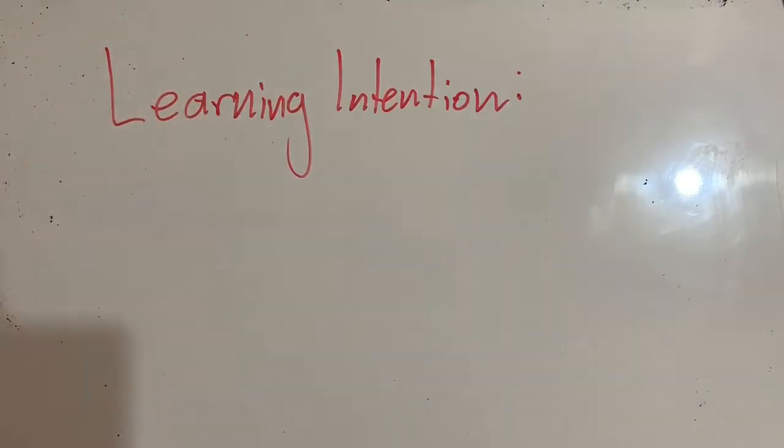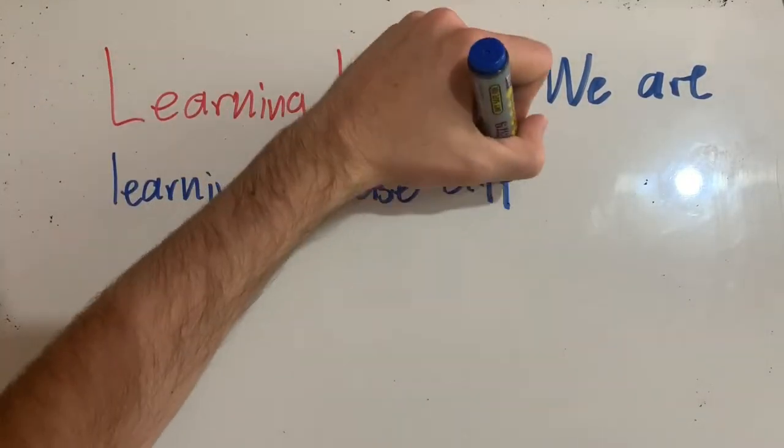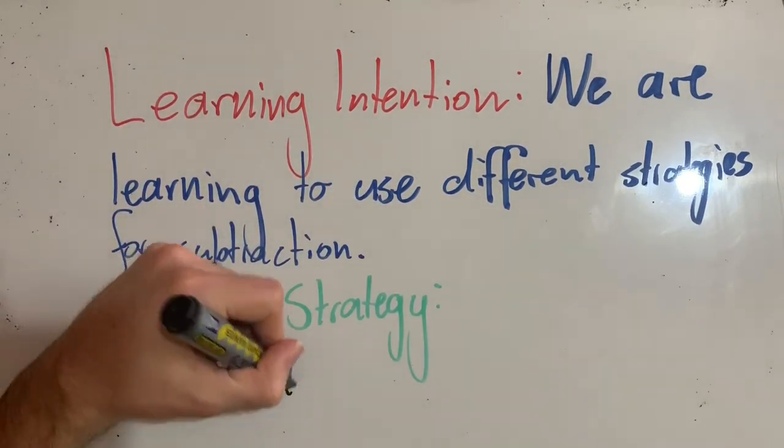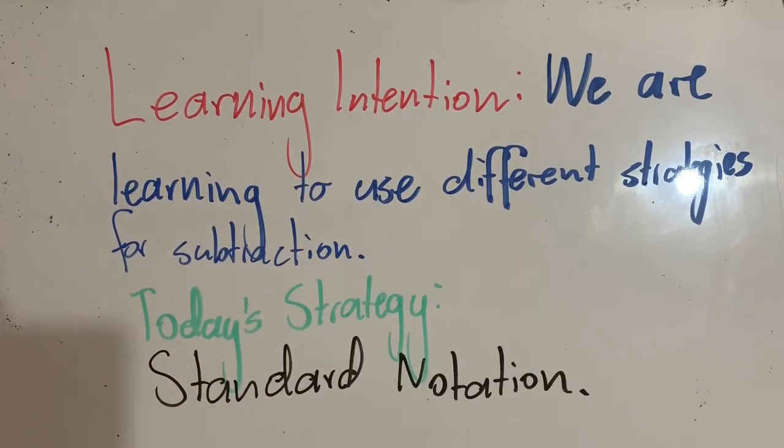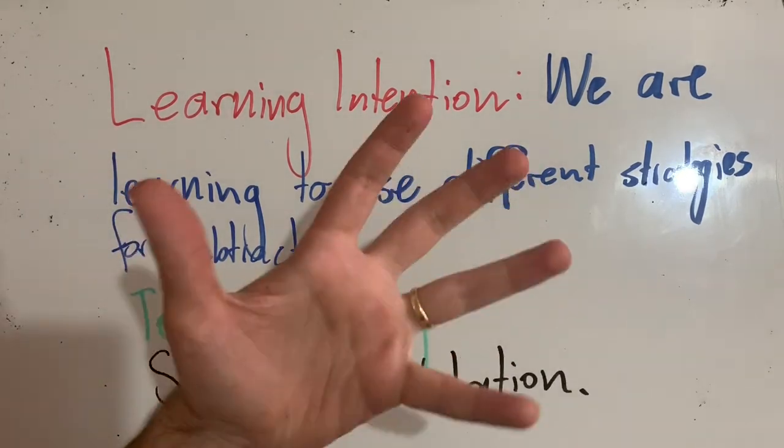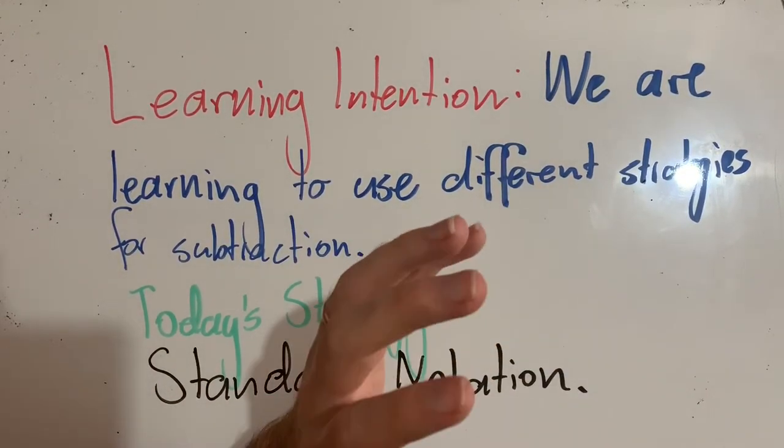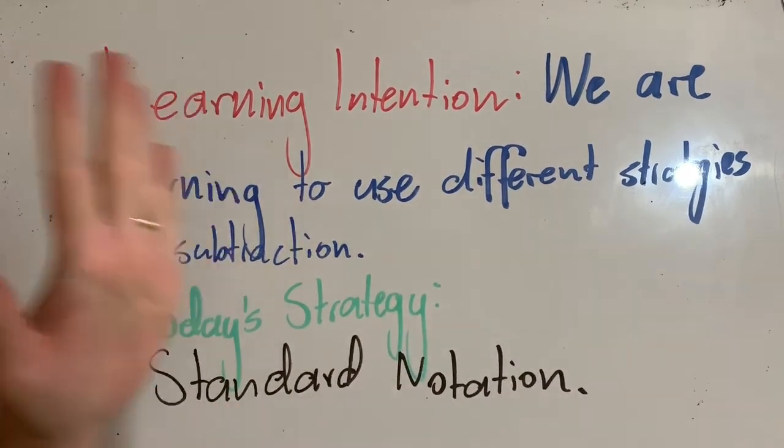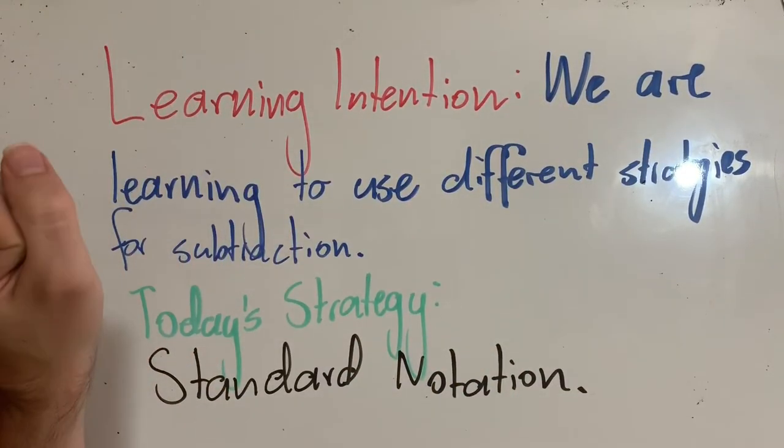Our learning intention for today is that we are learning to use different strategies for subtraction. And today's strategy is standard notation. Standard notation is a fantastic strategy to use if we're dealing with big numbers. It's not a great mental strategy, but if you're able to write it out on something, it's fantastic.